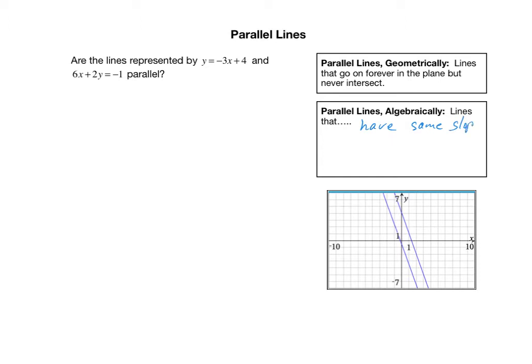Technically, we want to add in one other piece here. The two lines should have different y-intercepts, because if they have the same slope and the same y-intercept, then they're actually exactly the same line. The main thing is that they have the exact same slope, but they also should have different y-intercepts.